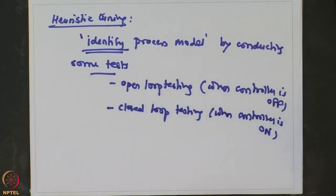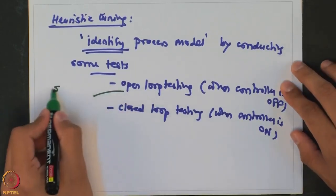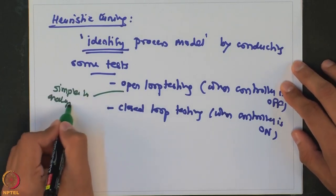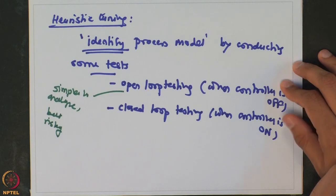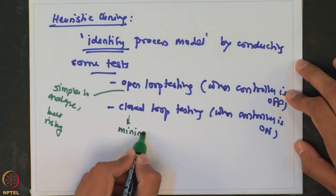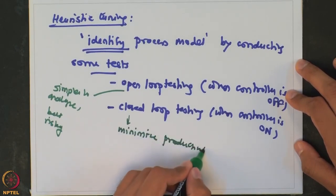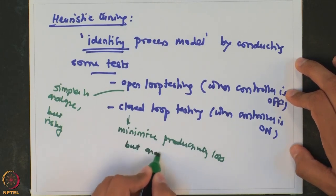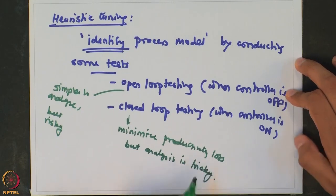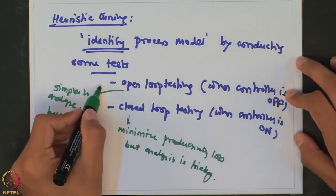Open loop methods are simpler to analyze but risky because you are switching off the controller, so there is no guarantee that the system will remain stable or your product will remain close to the set point value. This puts a lot of responsibility on the operator, and if the operator is inexperienced, he may drive the process towards instability. Closed loop methods tend to minimize loss since you operate close to the set point, but analysis is trickier.